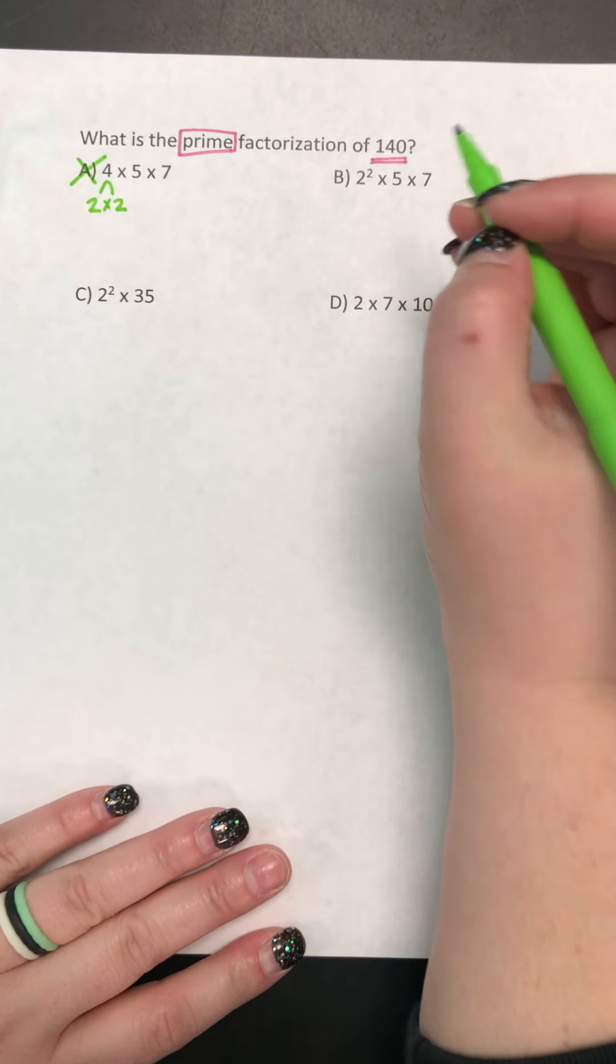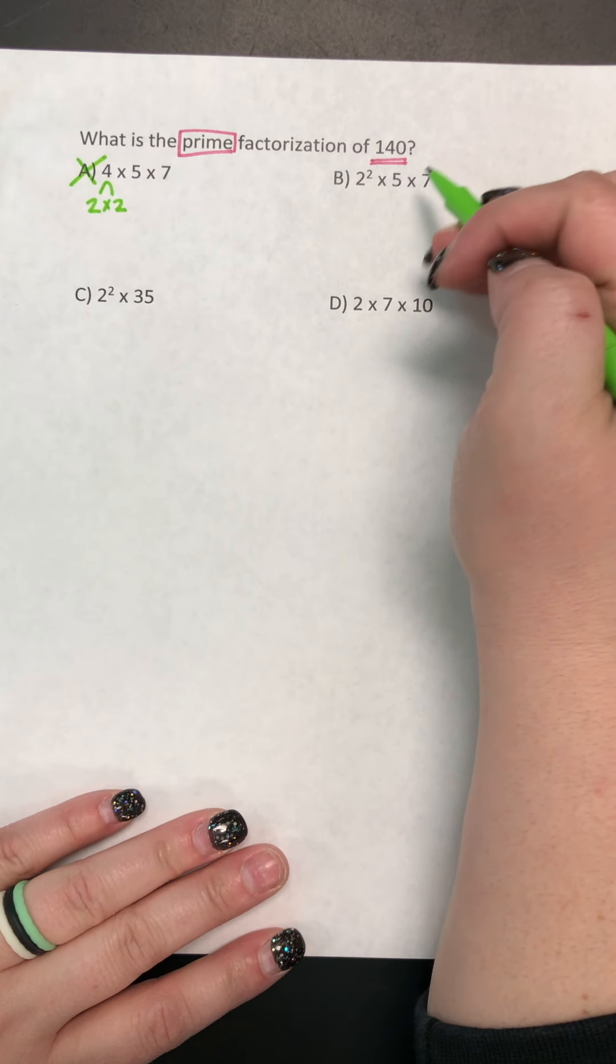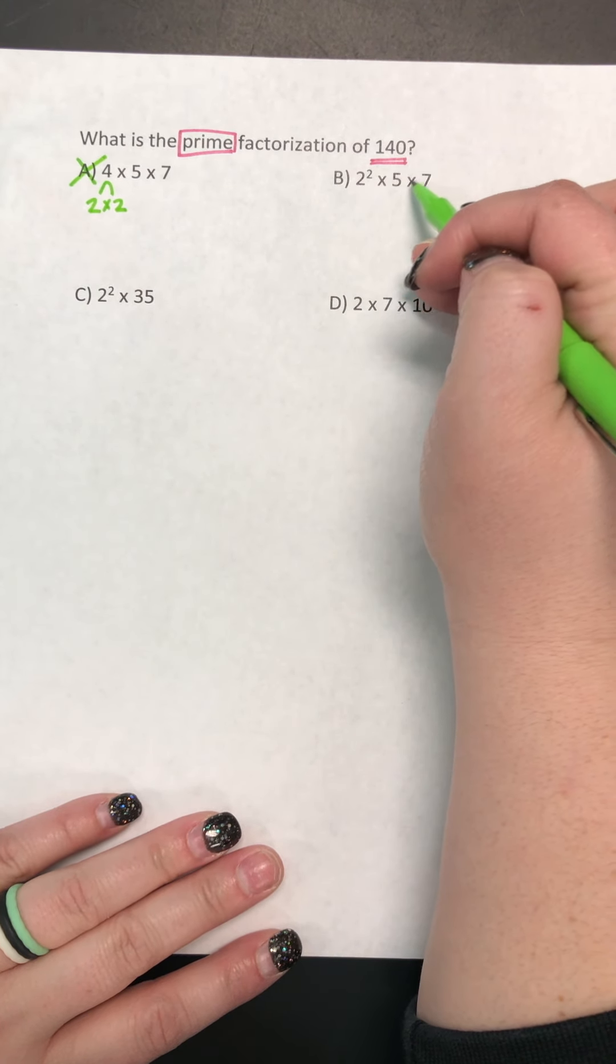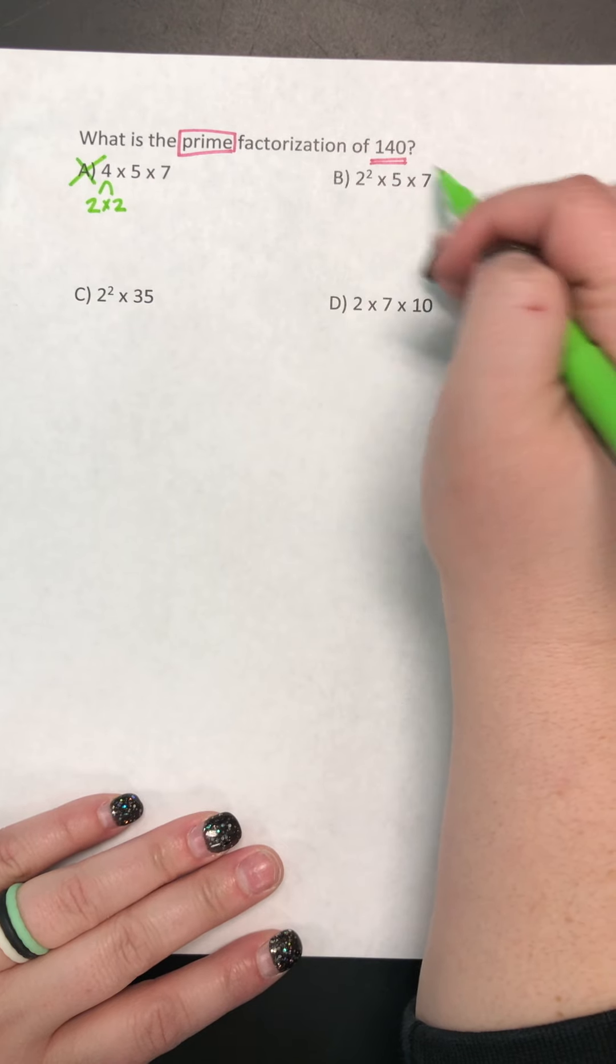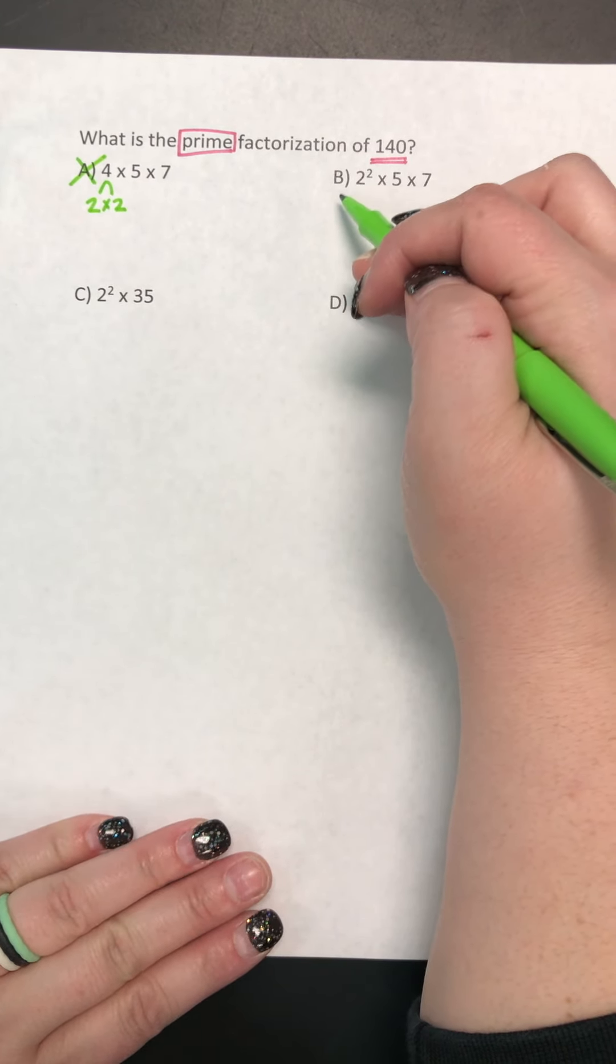So let's check B. So right now we're not multiplying, we're just checking for those prime numbers. So we have a 2, a 5, and a 7. So I know that all of these are prime, because the only thing that multiplies to get 2 is 1 times 2.